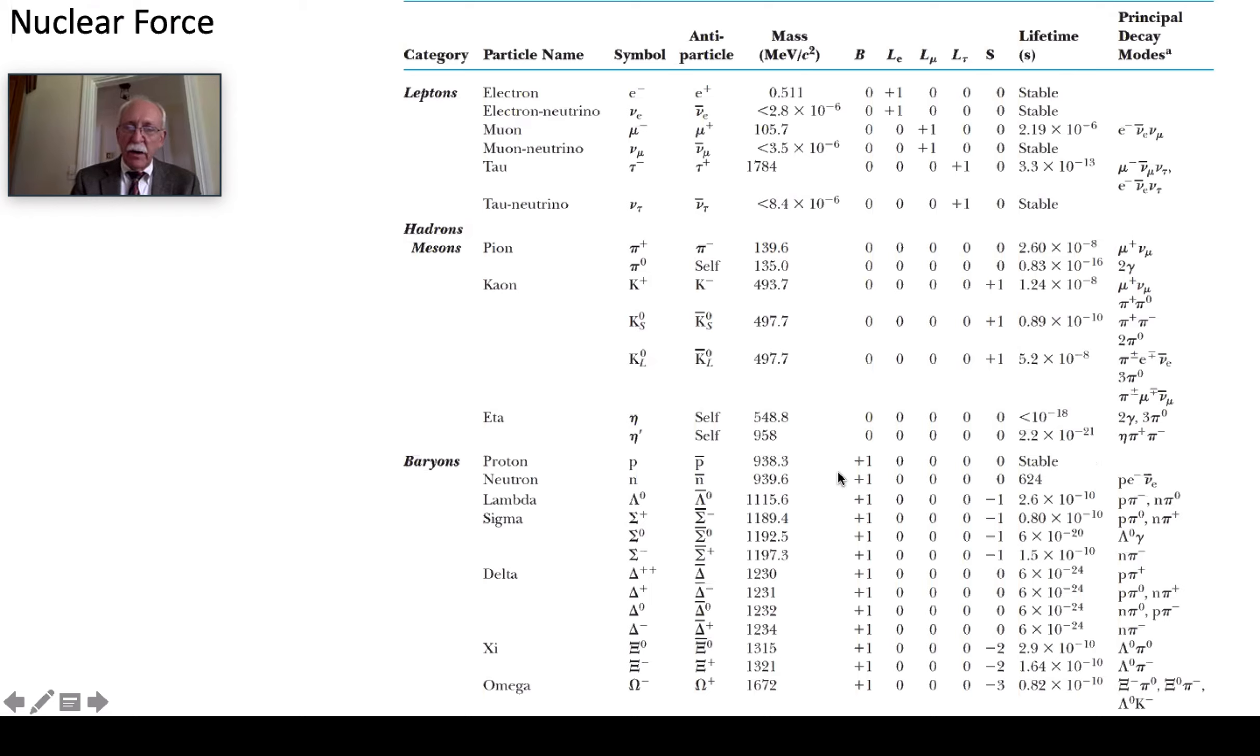So among the baryons there's a number called the strangeness number. And it's given a value of minus one, minus two, and minus three. And that's also a strange behavior since all the others seem to have just unit quantum numbers.